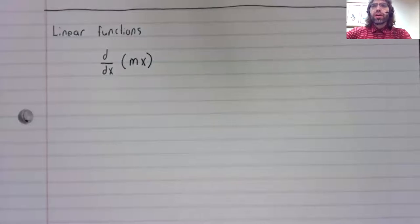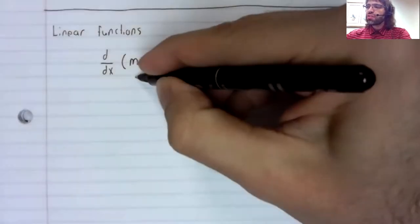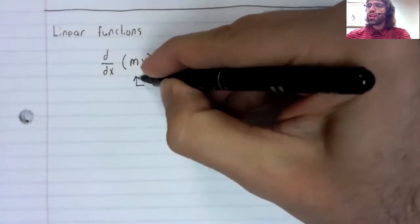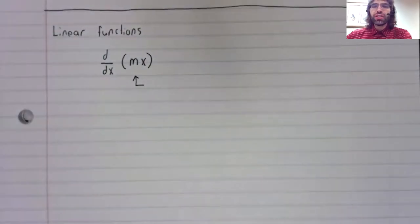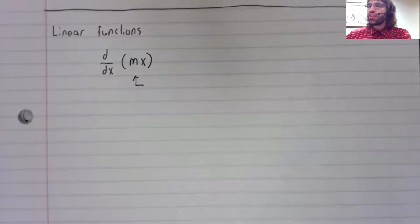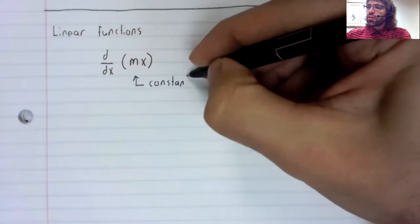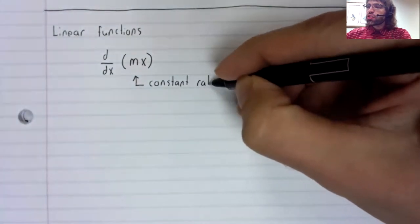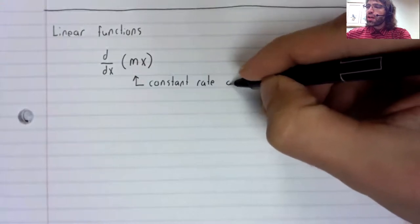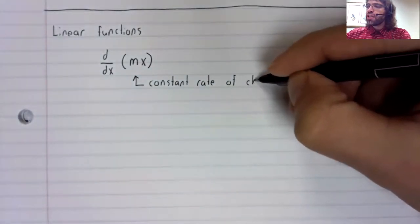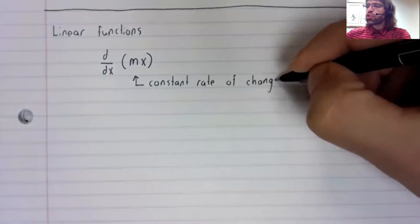And again, before I put the derivative on the paper, let's try to work this out, just thinking it through logically. What property does a function have to make it a linear function? Well, linear functions have constant rates of change.